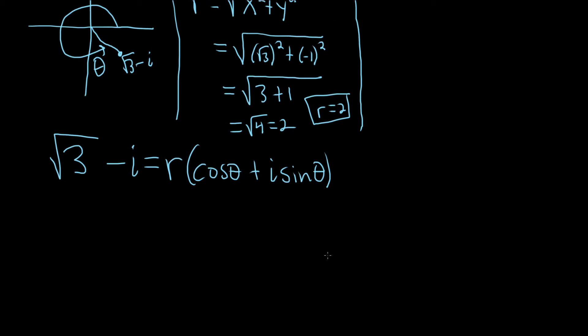And so now we know what r is. So this is 2, parentheses, cosine theta plus i sine theta. Now you can distribute the 2. So this is 2 cosine theta plus 2i sine theta.